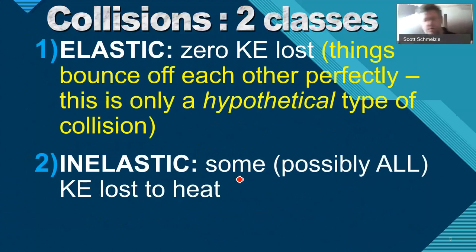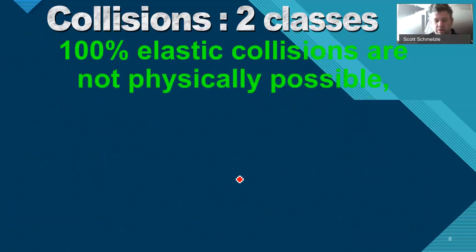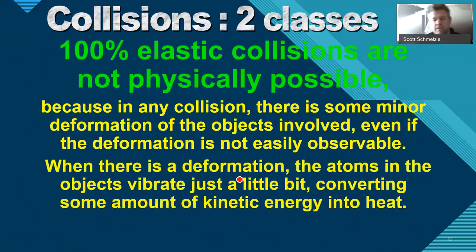There are two classes of collisions. Elastic, where zero kinetic energy is lost — things bounce off each other perfectly. This is a hypothetical type of collision; in a perfectly elastic collision there'd be no sound, no heat, no friction. 100% elastic collisions are physically not possible.